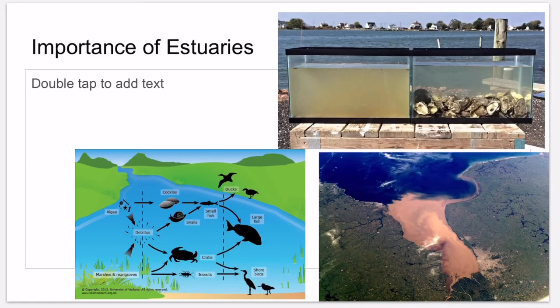An estuary occurs where a river meets the ocean and fresh and salt water combine to form brackish water. Estuaries are influenced a lot by tides, waves, and storms. In general, the salinity of the water will increase as you get closer to the ocean or during high tide, where the ocean level rises.